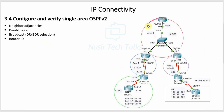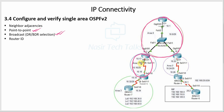Let's look at our topology. We will configure area 0 routers on a broadcast network. We will see DR/BDR selection and DR/BDR change using priority. We will also see point-to-point OSPF configuration and DR/BDR selection behavior. Next, we will look at the RIF network and how OSPF runs in the same topology.